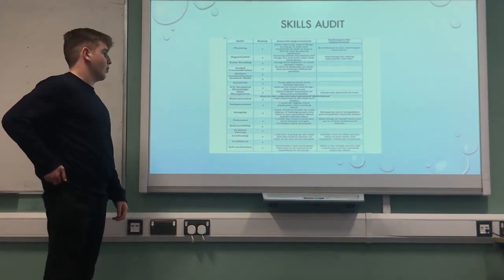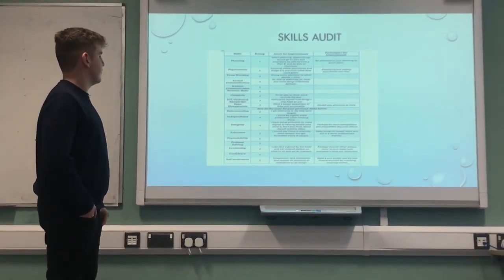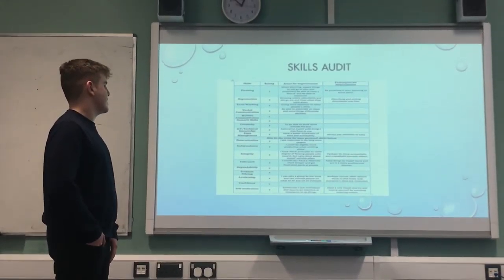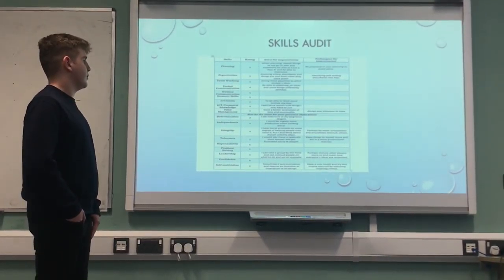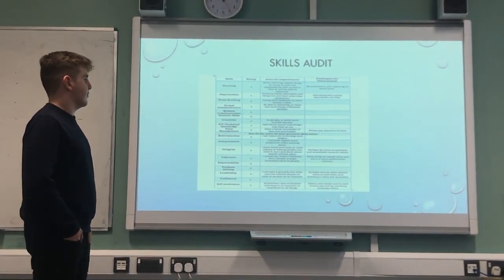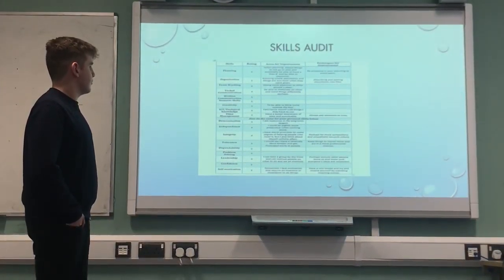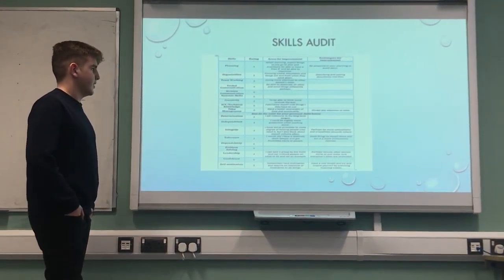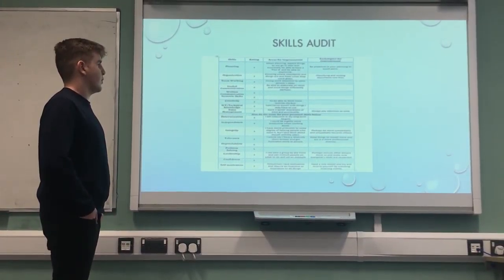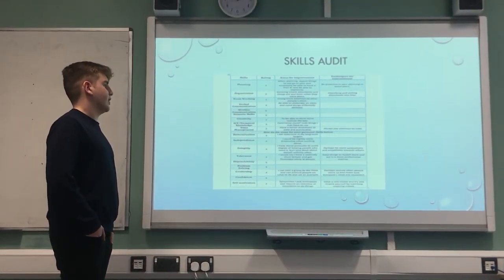This next part is the skills audit — I'm only going to read a few of these. Planning: I rate myself a three, because one of my areas of improvement is when planning, expecting things to not go to plan, and essentially being able to have a plan B and improvise. A technique for improvement is to be proactive in planning and avoid panic. Organisation: I rate myself a two. Areas of improvement: knowing where documents and things are and from when they were given. Technique for improvement is classifying and sorting documents into files.